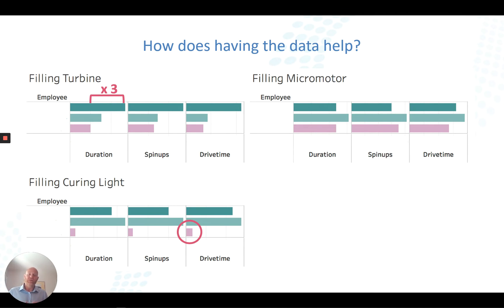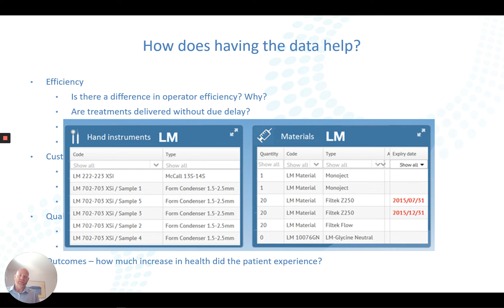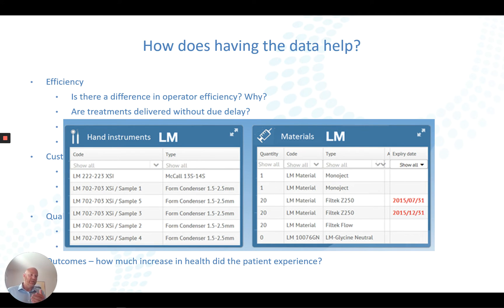This data is very important to analyze and use to our advantage — to become more efficient and change processes within our dentistry. Going forward, it will also become increasingly important to link data from hand instruments, materials, and consumables to the patient record. Whatever we're using on a patient, we need to capture that data in the patient record for quality assurance — confirming we've treated the patient correctly and that instruments have been correctly reprocessed.